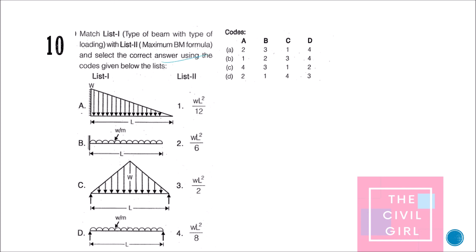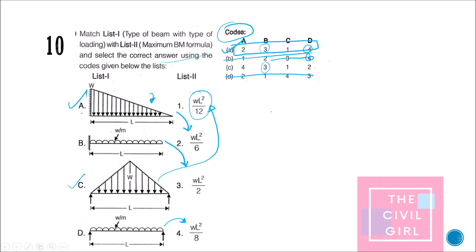Next question: match list 1 with list 2 for bending moment formulas. For a cantilever beam carrying a UDL, the maximum bending moment is wl²/2, so B matches with 3. For a simply supported beam carrying a UDL, the maximum bending moment is wl²/8, so D matches with 4. Using these two known values to eliminate the other options, the answer is option A.